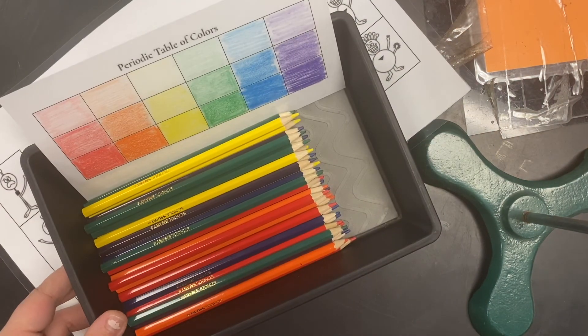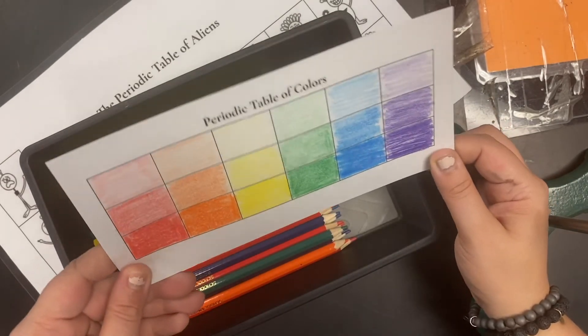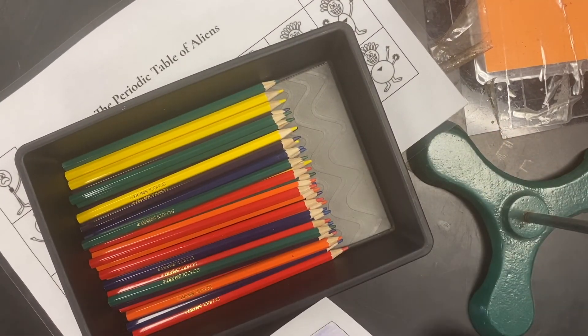So at your station, you're going to find a few things. When you get to the periodic table of colors, whatever picture you see here, you're going to use the colored pencils to recreate that on your lab sheet.